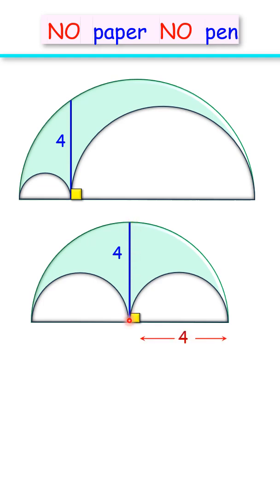Now the area of the green shaded region is the area of the big green semicircle minus two times the area of the white semicircles. Simplifying it, this will be 8π minus 4π, or our answer will be 4π centimeter square.